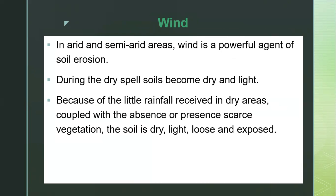Moving on, wind is the other agent of soil erosion. In arid and semi-arid areas, wind is a powerful agent of soil erosion. During the dry spell, the soils become dry and light because they lose their water content due to the little rainfall received in dry areas. Combined with the absence or scarcity of vegetation, the soil becomes dry, light, loose, and exposed.